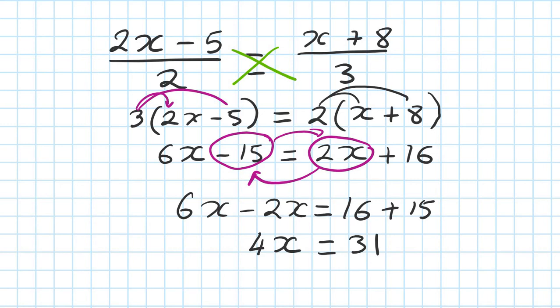Then I divide everything by 4 on both sides. Therefore, x equals — 4 goes into 31 seven times with remainder 3, so that means 7 and 3 quarters. But again, you don't have to do it in your head — just calculate it. 31 divided by 4 gives you the answer straight away. It's about the process.